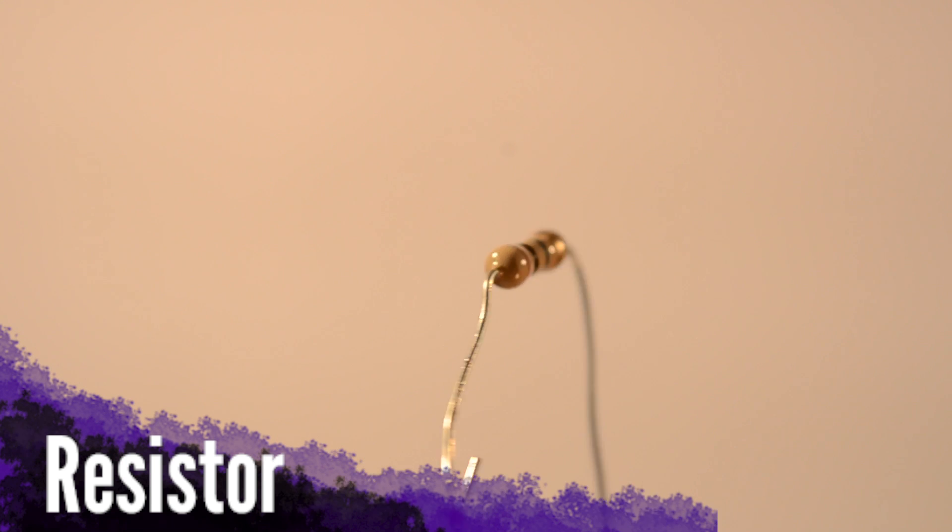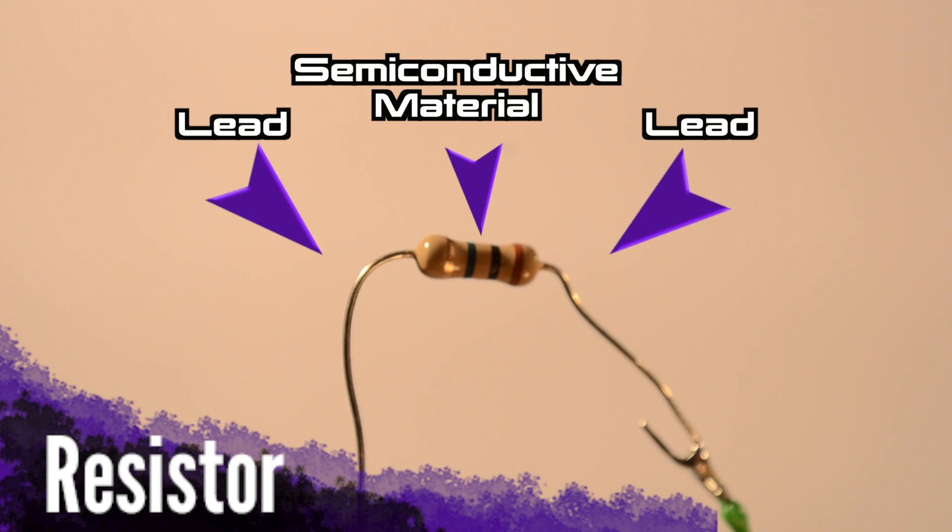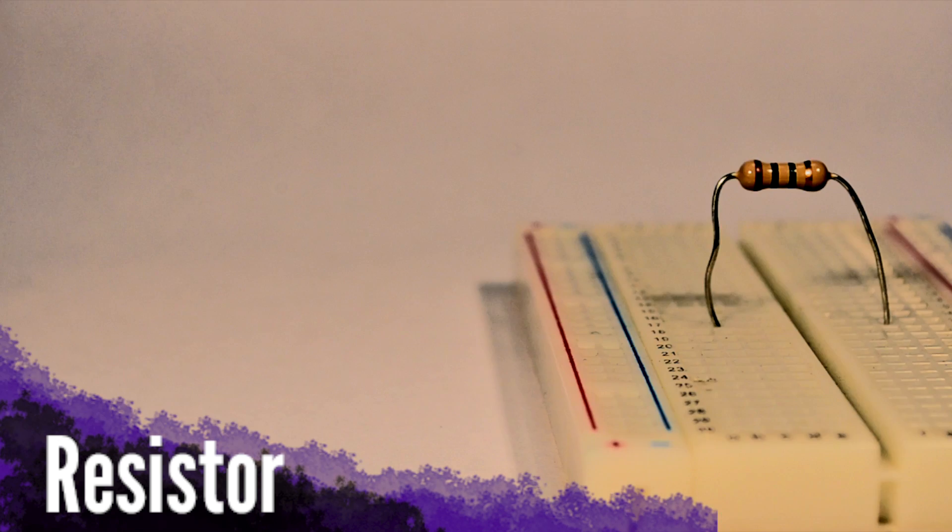This is exactly what happens when you put a resistor into an electrical circuit. Resistors are two terminal, passive components that reduce the flow of electrical current through any circuit into which they are implemented.